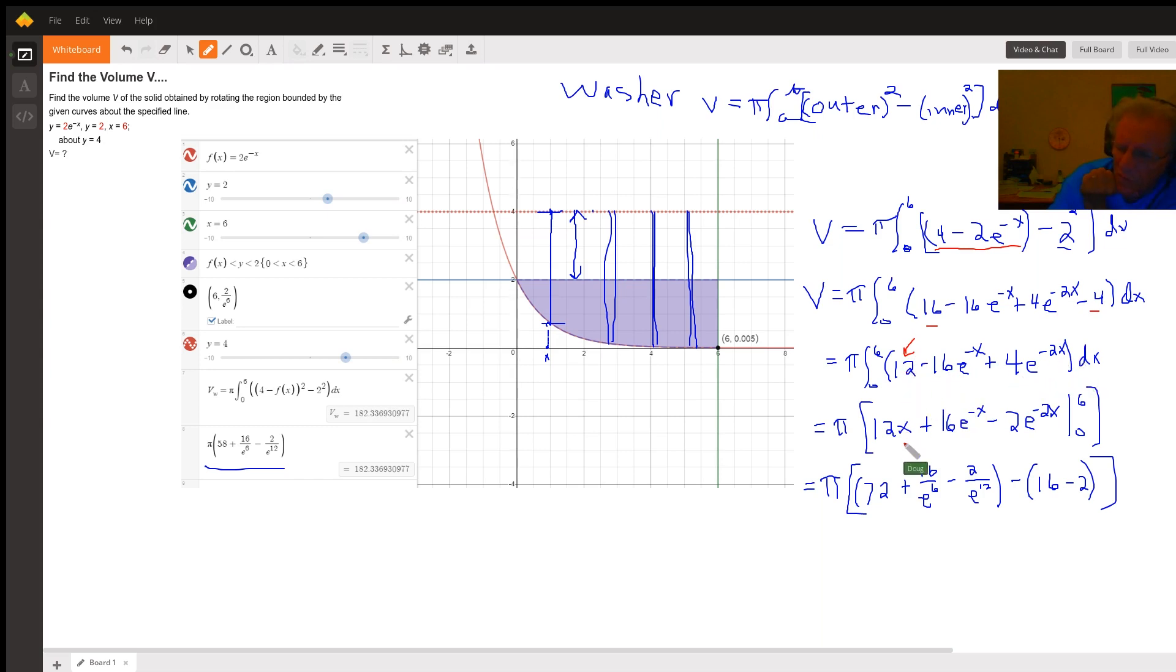Anti-derivative of 12 is 12x, the anti-derivative minus 16e to the minus x is plus 16e to the minus x, and a 4e to the minus 2x. It's minus 2e to the minus 2x. And we want to evaluate that from 0 to 6.